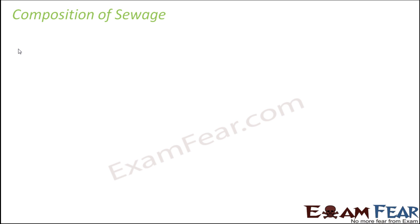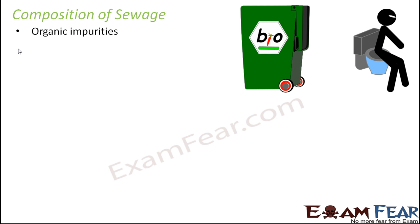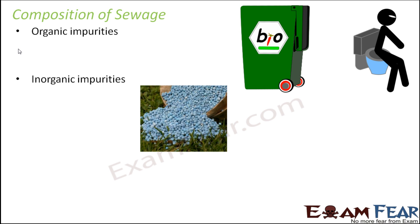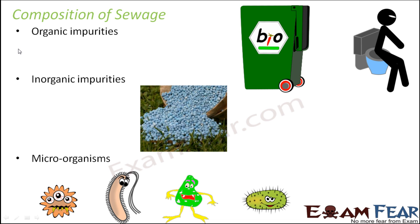Some components of sewage are organic impurities, which include human excreta, animal wastes, urea present in urine, oil, vegetable wastes, and pesticides — all containing carbon. The second type are inorganic impurities, for example nitrates, phosphates mostly present in fertilizers and chemicals, and metallic impurities.